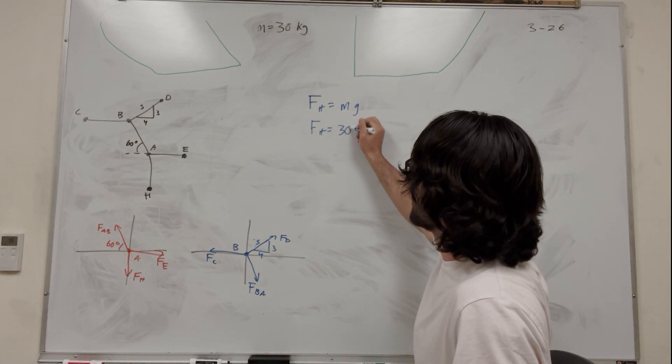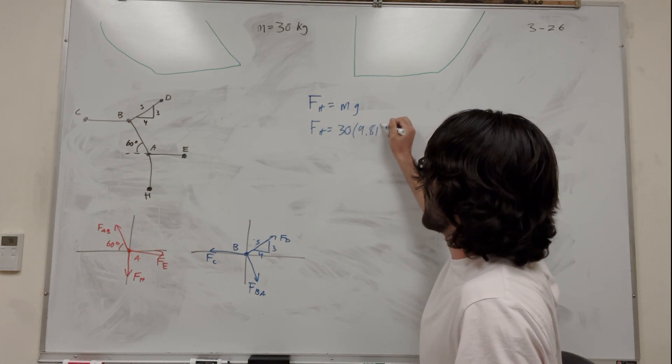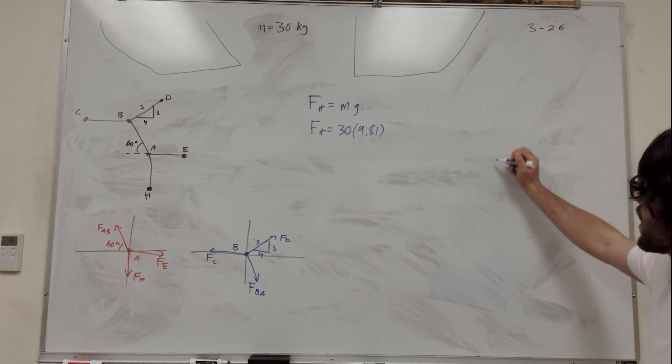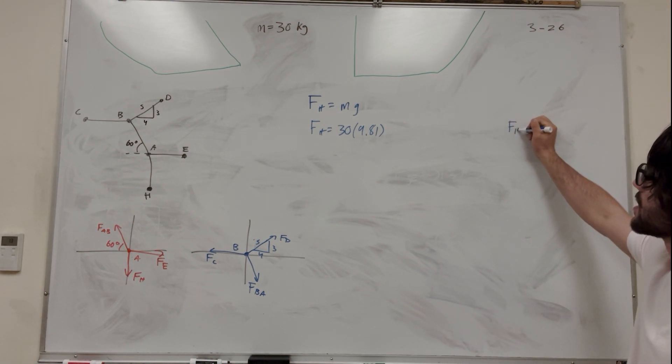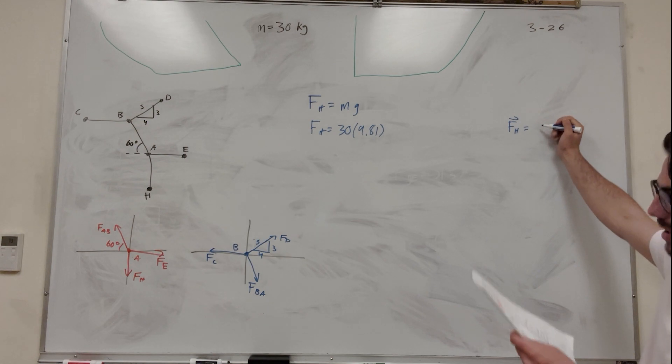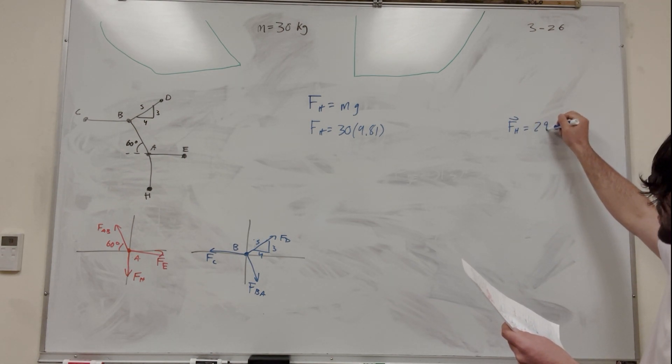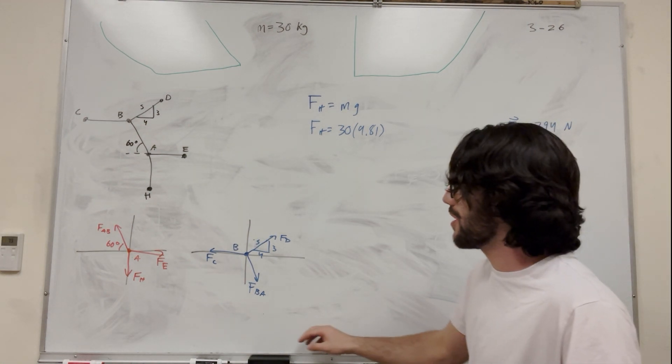So force H, we can have the mass 30 kilograms, and then we're on gravity, 9.81, or on Earth, 9.81. So we're going to write that over here. We're going to make a little list. Whereas H is going to be 30 times 9.81, which is 294 newtons. Cool. Nice, we figured out one of the five. Let's do the next ones.